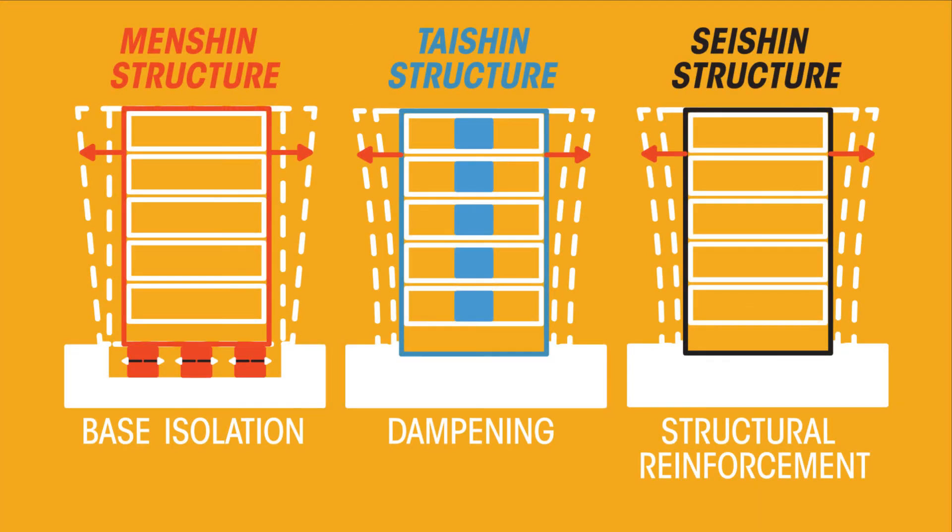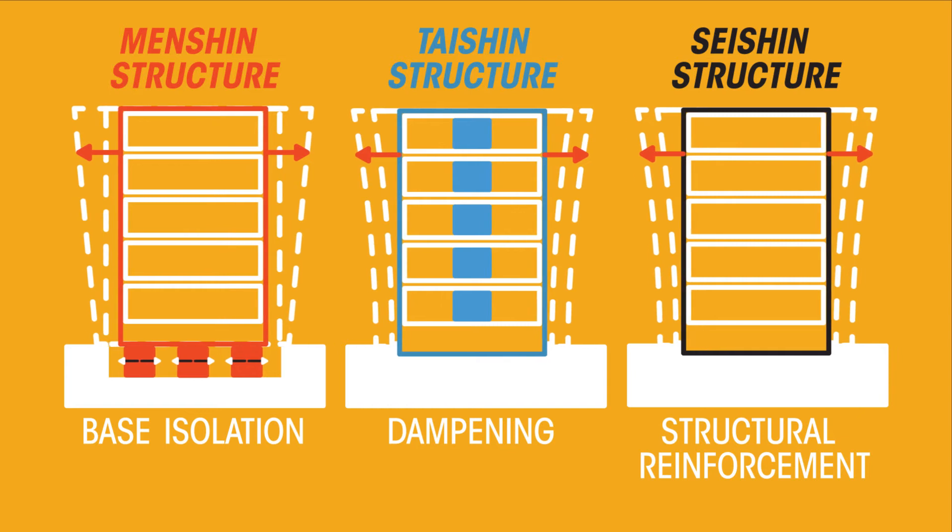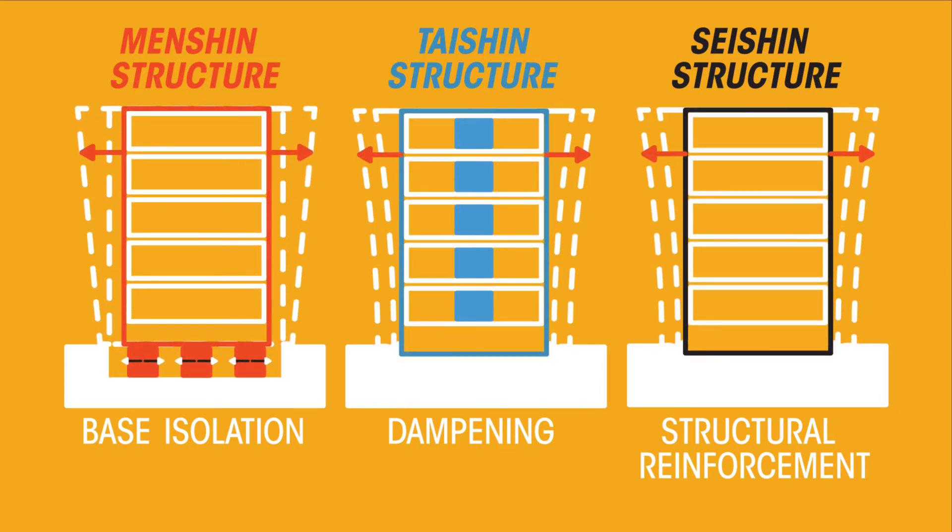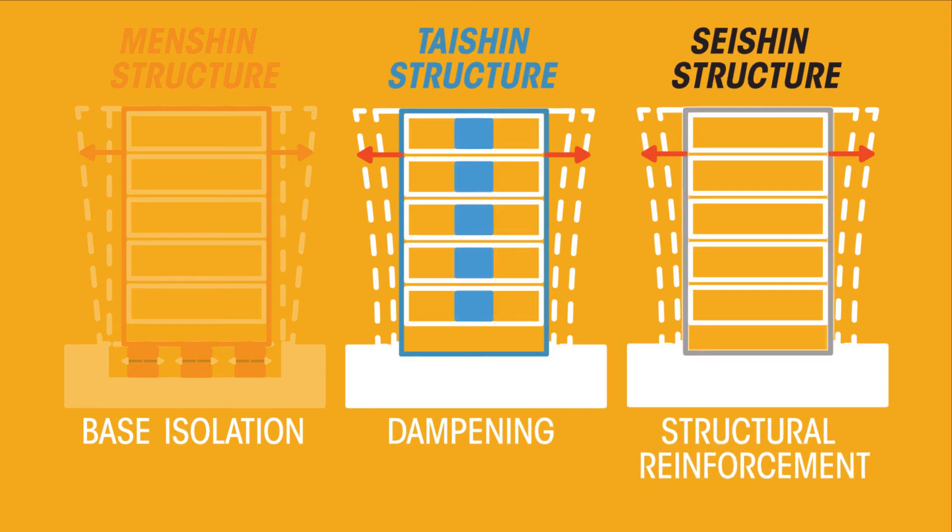Modern so-called earthquake-proof structures come in different designs, but all have the same objective: allow the building to survive significant side-to-side and up-and-down motion. They may support the whole building on shock absorbers or rely on the internal and external skeleton of the building to retain structural integrity while allowing the building around it to move.